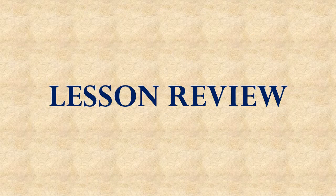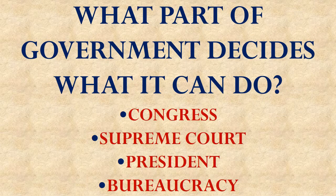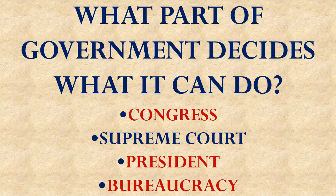Let's review what we learned in this lesson. What part of the government decides what the government can do — Congress, the Supreme Court, the presidency, or the bureaucracy? It's the Supreme Court that decides what the government can do, through its power of judicial review where they declare things unconstitutional.